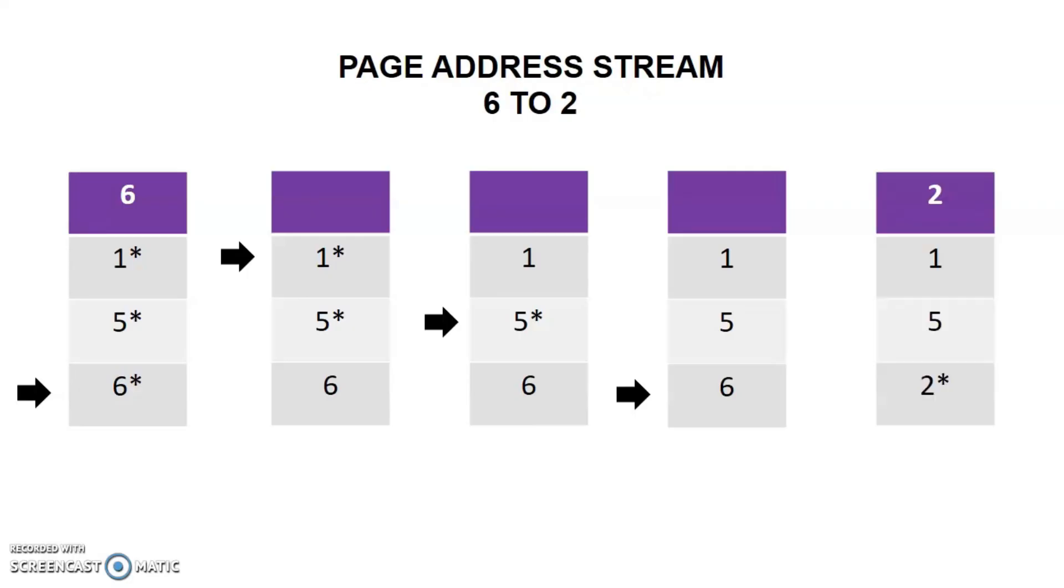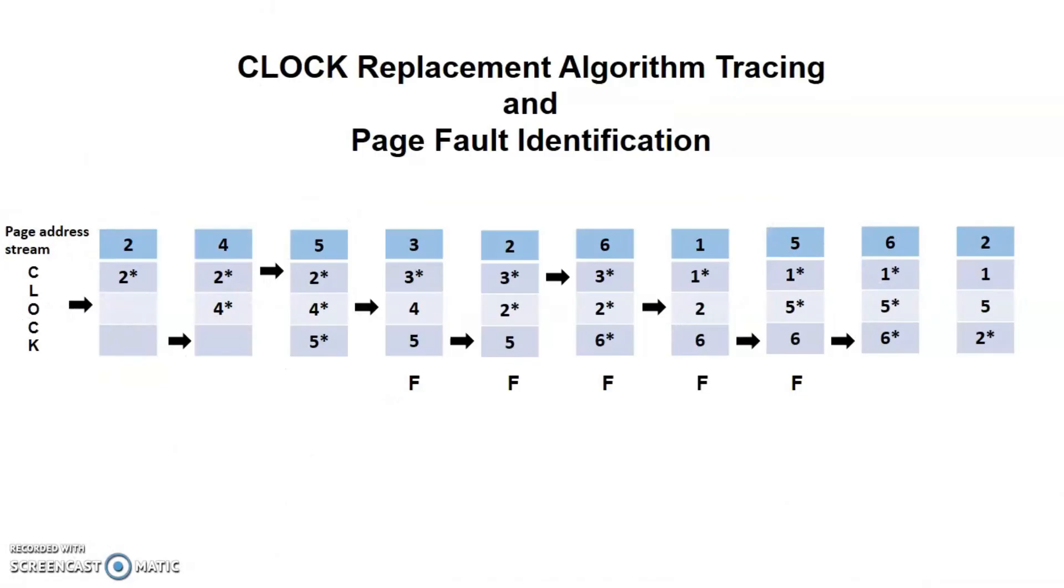The frame is then set to 1 use bit. The pointer will move towards the first frame and a page fault occurred here. So the final outcome of the clock replacement algorithm for the page address stream is with a total of 6 page faults.